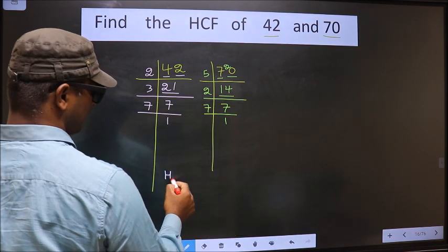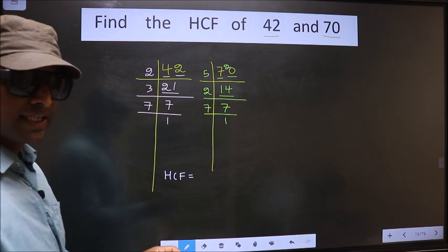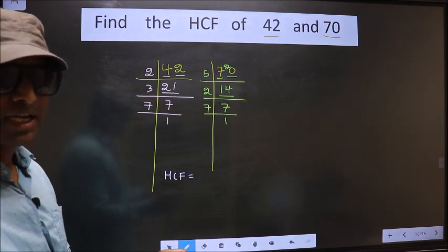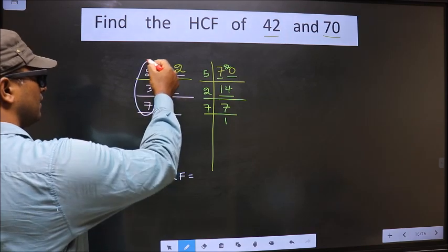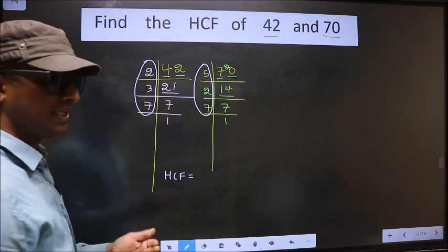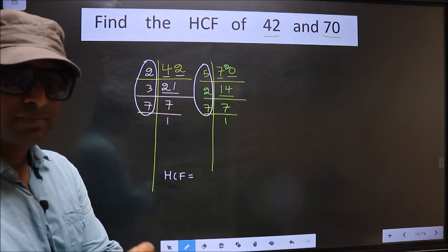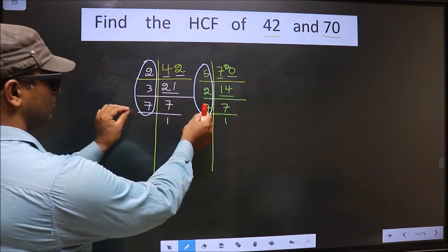Now, our HCF is... HCF is the product of numbers which should be present here and also here. I repeat. HCF is the product of numbers which should be present in these 2 places.